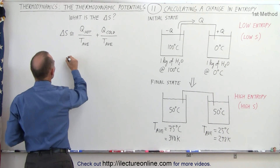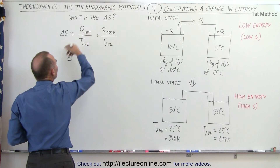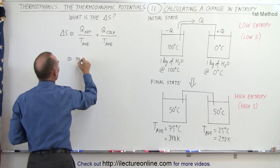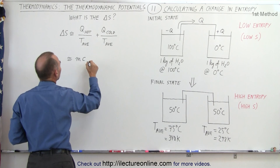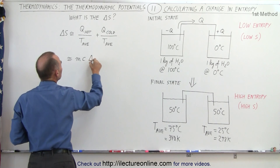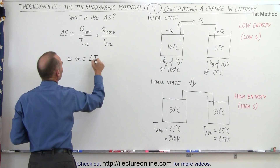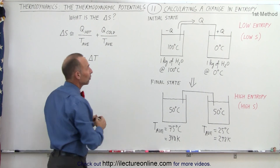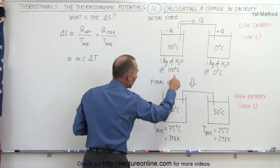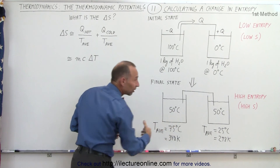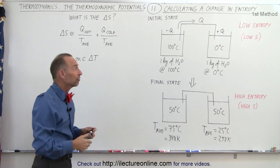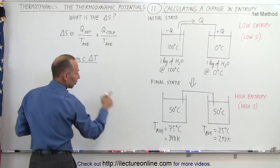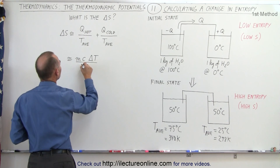This is going to be equal to the heat coming out of the hot reservoir, which is the mass of the water times the specific heat of the water times the change in temperature. Notice that the change in temperature is going to be negative because we go from 100 degrees centigrade to 50 degrees centigrade — that's a negative change. We divide that by the average temperature, which is 348 Kelvin.